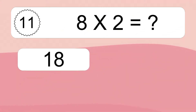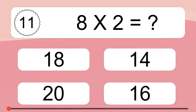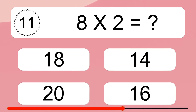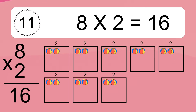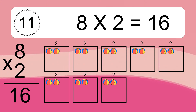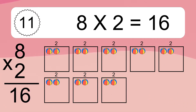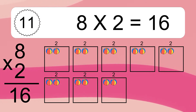8 times 2 equals what? We have 8 boxes and each box has 2 colorful balls inside. If you count all the balls in all the boxes together, you will have 8 times 2 balls. This equals 16 balls.